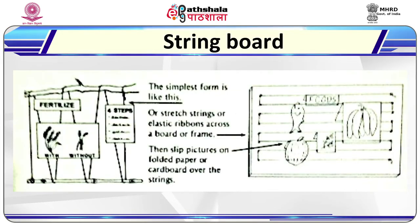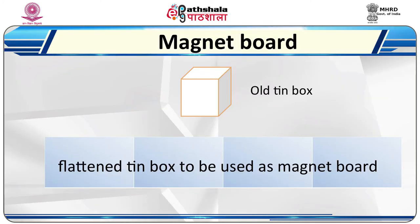String boards are also used as display boards — they are better than flannel boards as they prevent pictures from falling off or blowing away in wind. Imaginative low-cost string boards can be made using locally available material and expertise. A magnet board is also used as a display board; it can be prepared with a thin piece of tin-plated steel. An old sign board or a flattened tin box may be used, with very small pieces of magnets glued at the back of pictures to make them stick to the metal board.